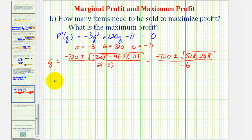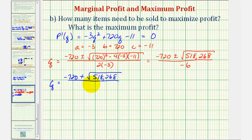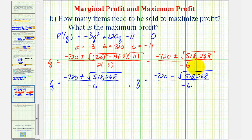So we have two critical numbers. One is q equals negative 720 plus the square root of 518,268, divided by negative 6. The other is q equals negative 720 minus the square root of 518,268, divided by negative 6. The decimal approximations are q approximately 0.0153 and q approximately 239.9847.